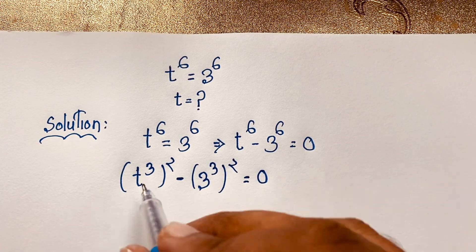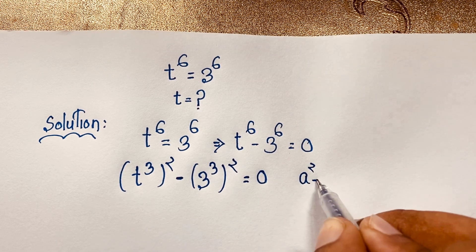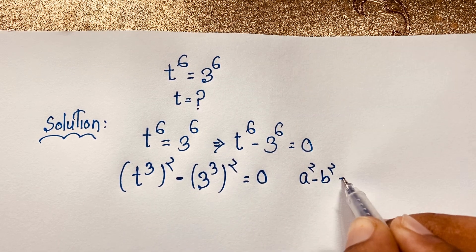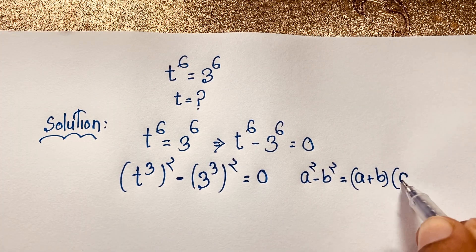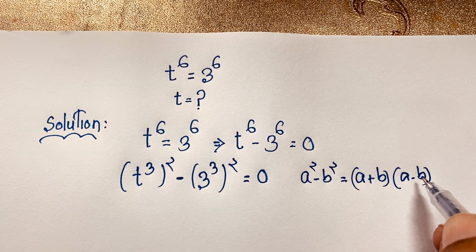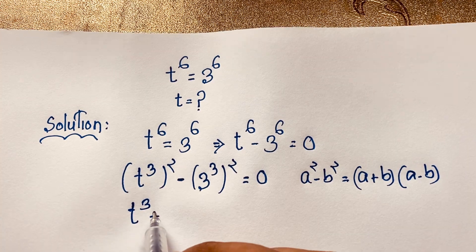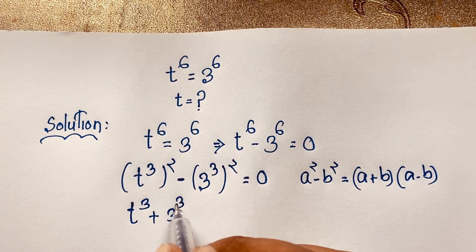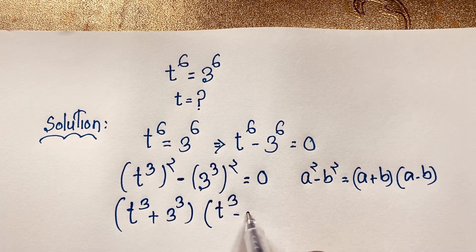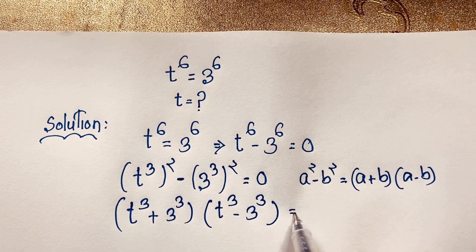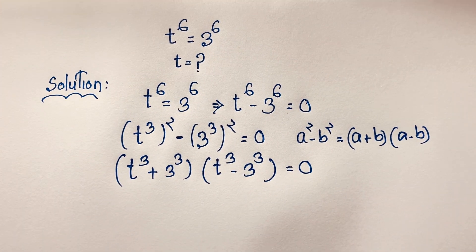Now at this moment, if we let a = t³ and b = 3³, this matches the pattern a² minus b², which factors as (a + b)(a − b). Applying this formula, it becomes (t³ + 3³)(t³ − 3³) equals 0, where a is t to the power 3 and b is 3 to the power 3.